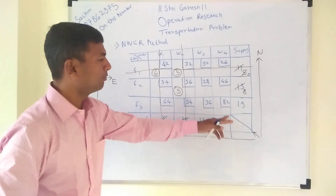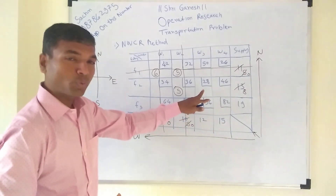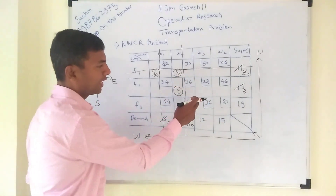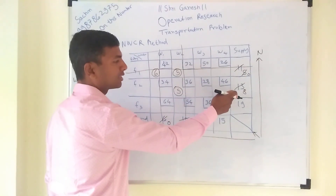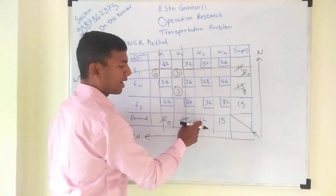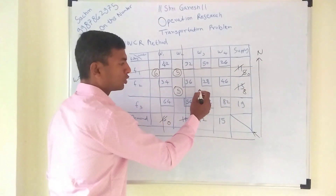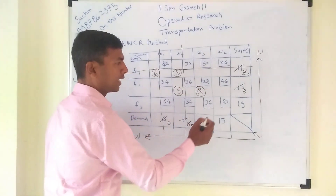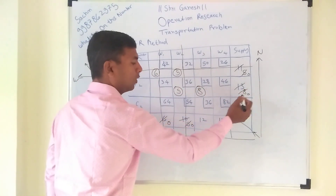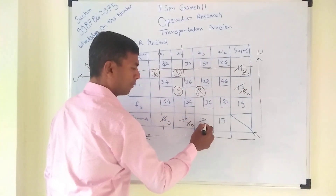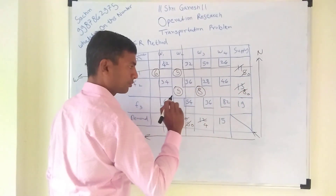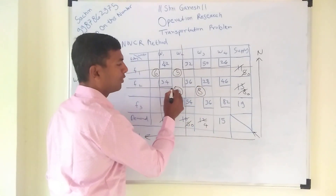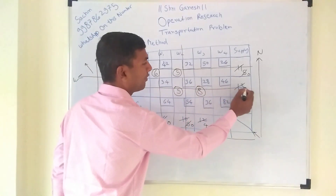The next top-most North-West corner is 28. You have to select that. Check: supply is 8, demand is 12. The smallest one is 8. Write 8 in that cell — supply becomes 0, demand becomes 4. Factory 2 is done with their supply, so we have to cancel factory 2.